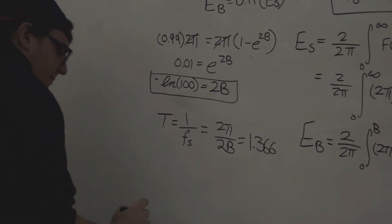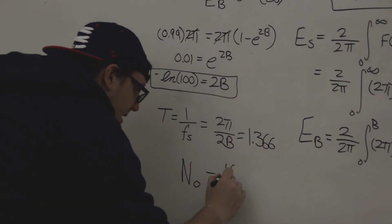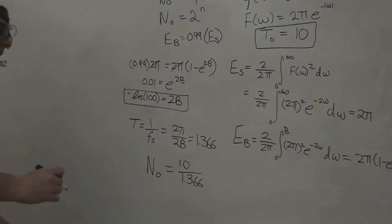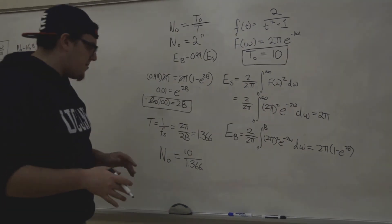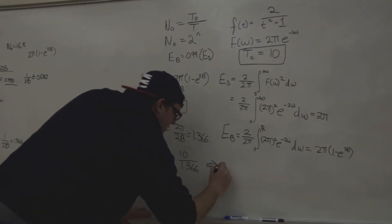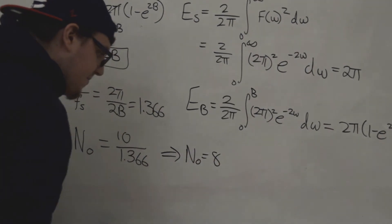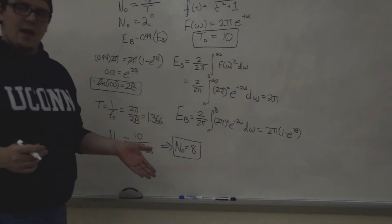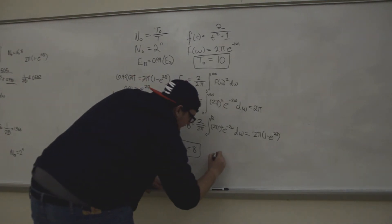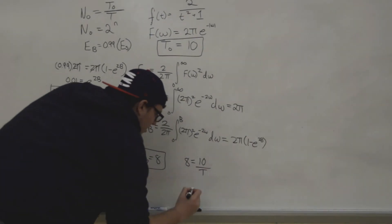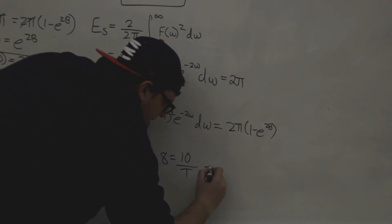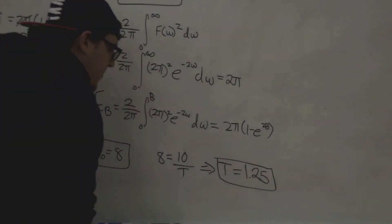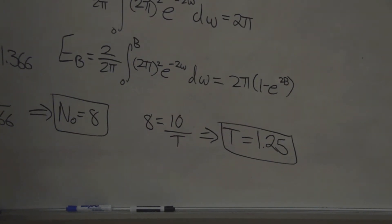With T equal to 1.366, N0 equals t0 over T, which is 10 over 1.366. Since this must be a power of 2, the closest power of 2 is 8. So we use N0 equals 8. Adjusting T so that 8 equals 10 over T, we get T equal to 1.25, or 10 over 8.